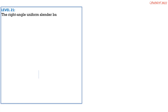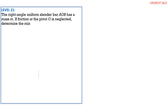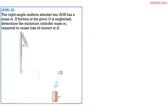The right-angle uniform slender bar AOB has a mass M. If friction at the pivot O is neglected, determine the minimum cylinder mass M1 required to cause loss of contact at A. The total mass of this right-angle uniform slender bar is M.